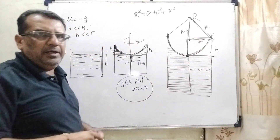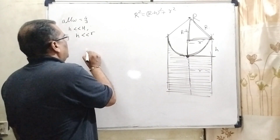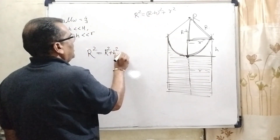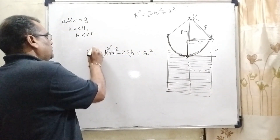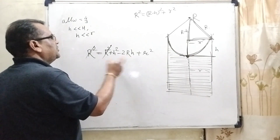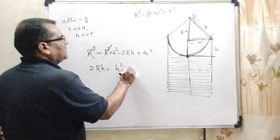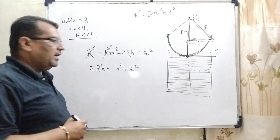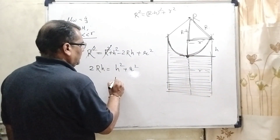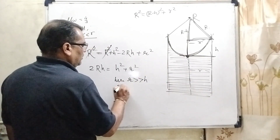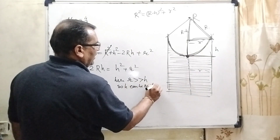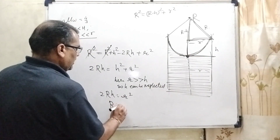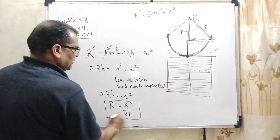Using Pythagoras theorem: R² = (R − h)² + r², which expands to R² = R² + h² − 2Rh + r². Rearranging gives 2Rh = h² + r². Since small r is much greater than small h, the h² term can be neglected. So 2R·h = r², giving capital R = r² / (2h). This is our first equation.